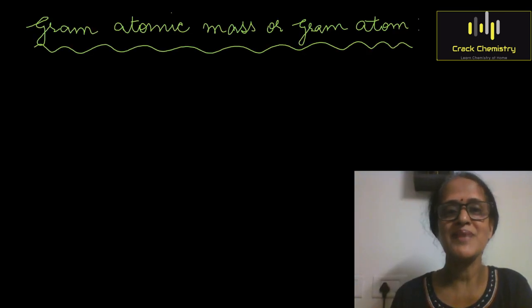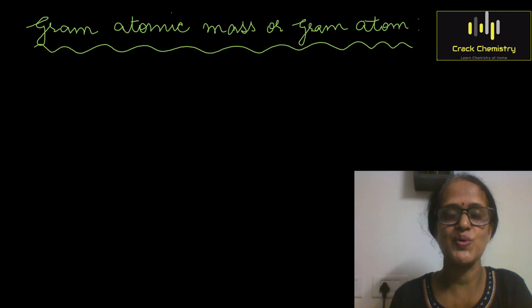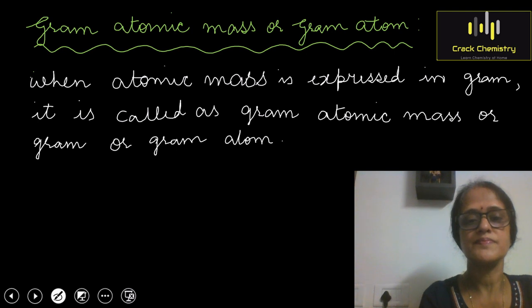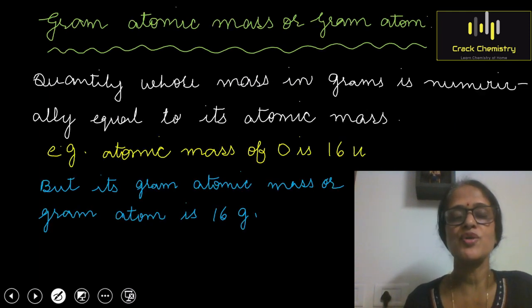First of all, we will see what is Gram Atomic Mass or Gram Atom. Gram Atomic Mass or Gram Atom of an element is the quantity whose mass in grams is equal to its atomic mass. In other words, when atomic mass is expressed in grams, it is called Gram Atomic Mass or Gram Atom. Gram Atomic Mass is the quantity whose mass in grams is numerically equal to its atomic mass.